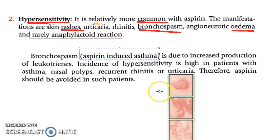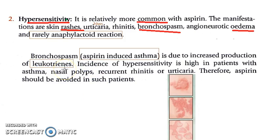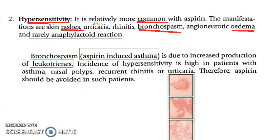Aspirin induces asthma because of bronchospasm due to increased production of leukotrienes. When COX is inhibited, LOX — lipoxygenase — comes into action and leukotrienes are made, which induce bronchospasm. Incidence of hypersensitivity is high in patients with asthma, nasal polyp, recurrent rhinitis, and urticaria. Therefore, aspirin should be avoided in such patients — if they have asthma, do not give aspirin.